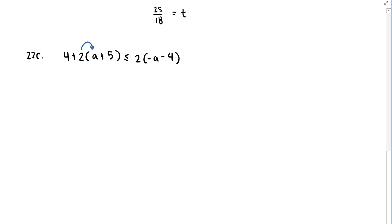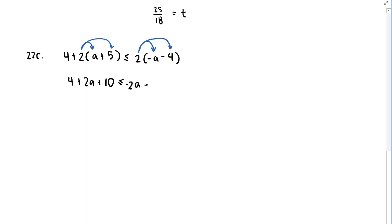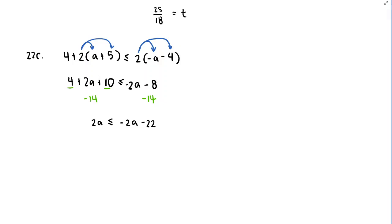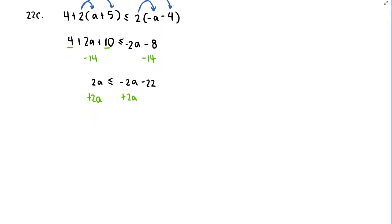First I'll distribute the 2 on both sides and simplify: 4 + 2a + 10 ≤ −2a − 8. Combining 4 and 10 gives 14, so 2a + 14 ≤ −2a − 8. Subtracting 14 from both sides: 2a ≤ −2a − 22. Adding 2a to both sides: 4a ≤ −22.